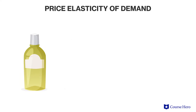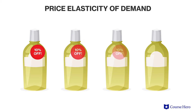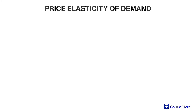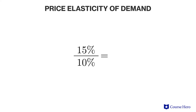For example, if the price of shampoo decreases by 10%, we know consumers will buy more — but how much more? If the resulting demand for shampoo increases by 15%, then the elasticity would be calculated as 15% divided by 10%, which would give us an elasticity of 1.5.